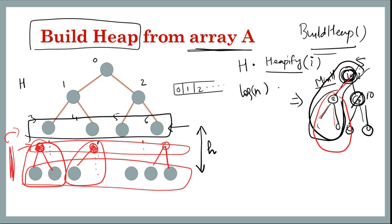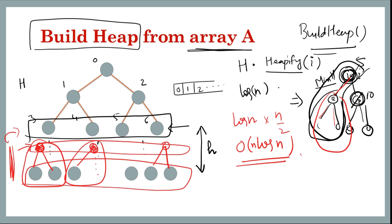Straightforwardly, if the time complexity of one heapify operation is O(log n) and we are doing it for all nodes — or maybe n/2 nodes — then the overall time complexity would be O(n log n). This is an upper bound, but it is not strictly tight. We can get an even lower bound, and let's see why.